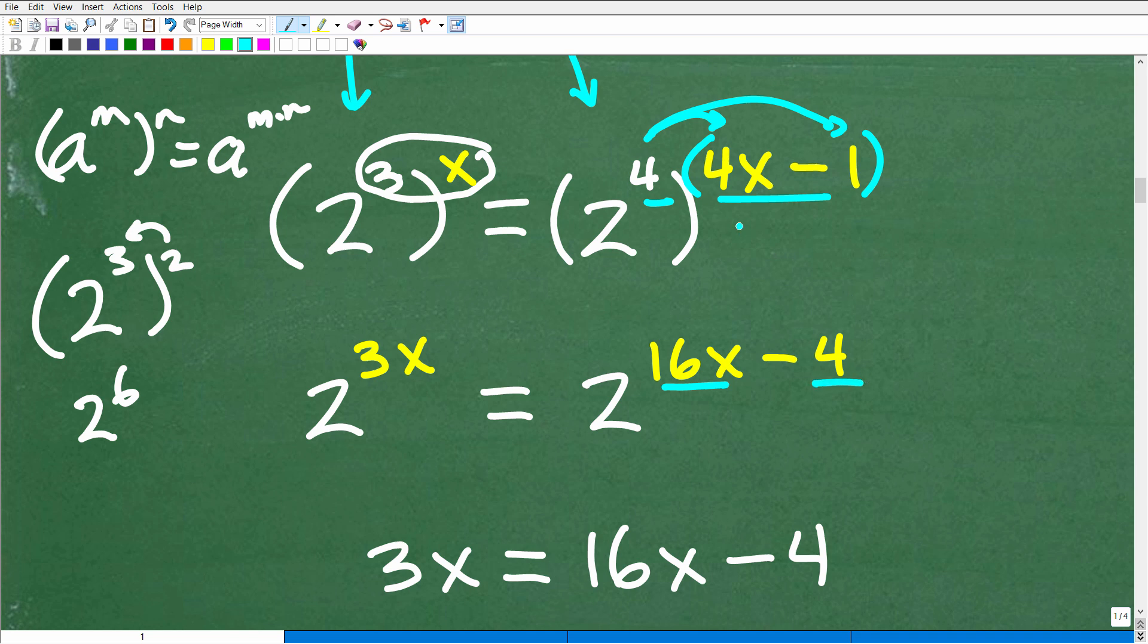So this is going to be 4 times 4x, which is 16x, and then 4 times this one right here, which would be 4, right? This is not going to just be 16x minus 1. So if you made that mistake, I'm glad that you did, because next time you'll know to put parentheses around these expressions.